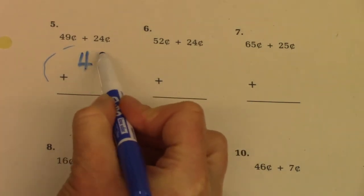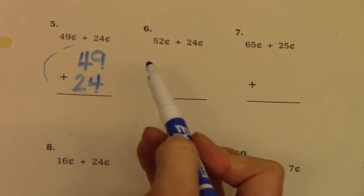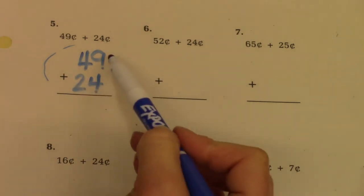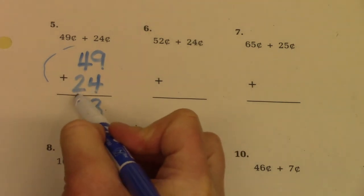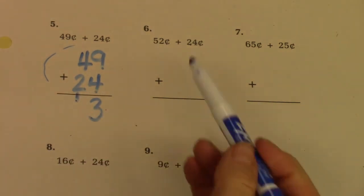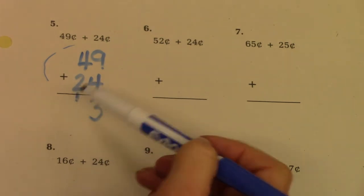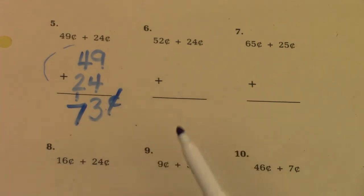I'm going to write 49 and then 24 underneath it, making sure that my ones place and my tens place are lined up. 9 plus 4 is 13. I'm going to put a little one in the tens column and I have 4 plus 2 is 6 plus one more is 7. The answer here is 73 cents.